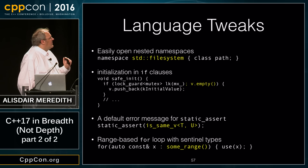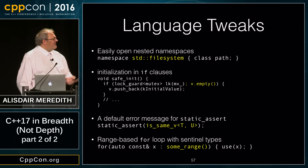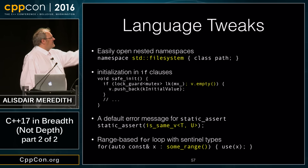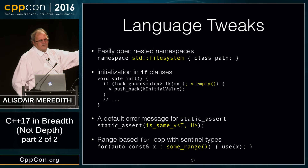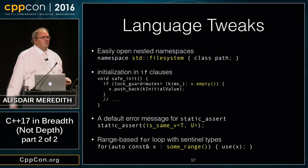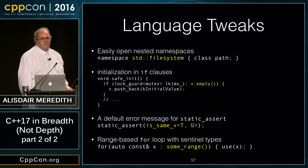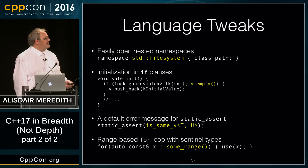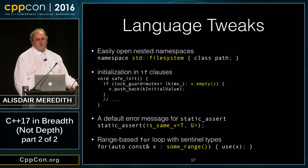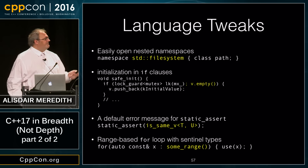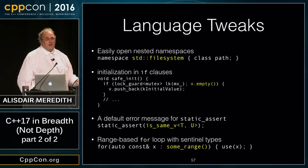Language tweaks: one that was requested going back at least as far as C++11 is the ability to open a nested namespace, so `namespace std::filesystem` — you don't need to independently open both namespaces. It can be closed with a single curly brace, which is handy when writing macros.